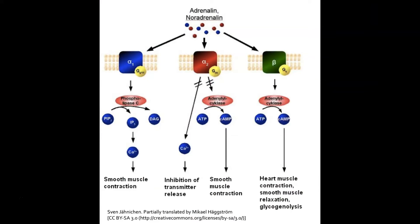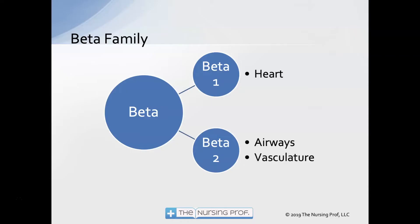The sympathetic nervous system works through the release of adrenaline or noradrenaline — that is, epinephrine or norepinephrine — and the effects those have on different body parts. We get smooth muscle contraction, inhibition of transmitter release, and effects on the heart. These different types of effects are labeled as alpha and beta. Since we're concerned about beta blockers, we're going to focus on just the beta part.